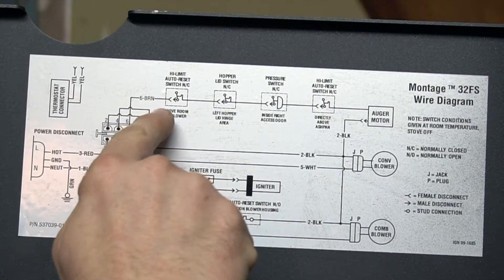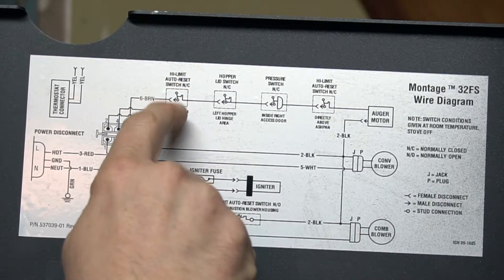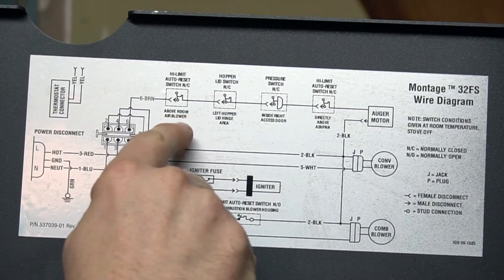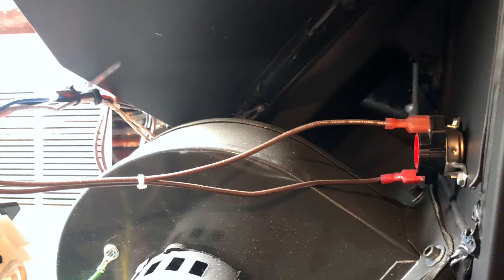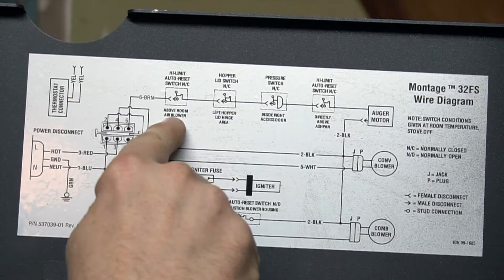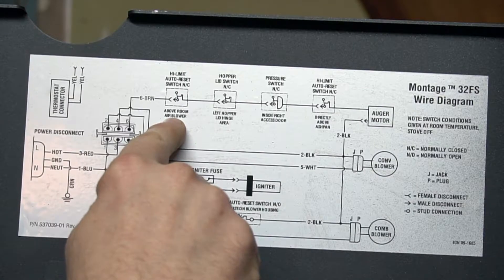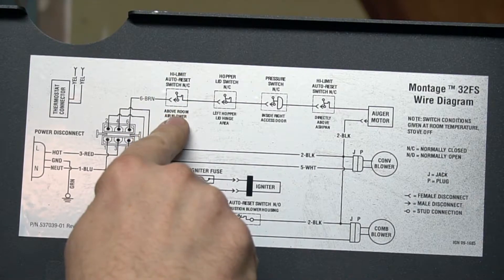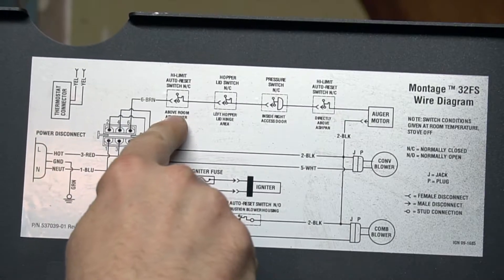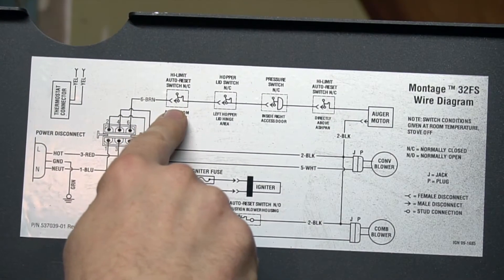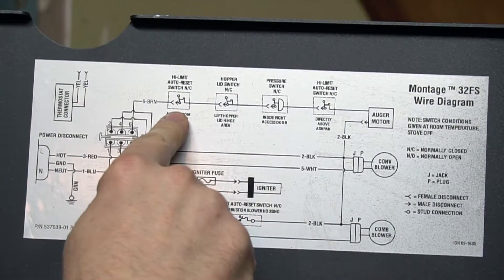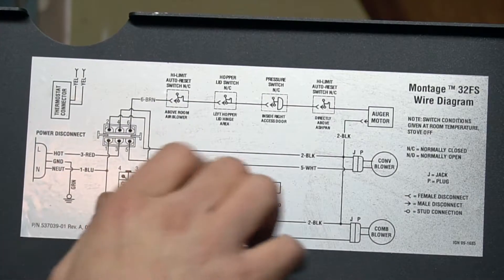on the feed circuit. So we have a high limit auto reset which is normally closed, and this is above the room blower. So if the room blower is not working properly, the back of the stove will overheat and it will shut off the feed. All right, so if you're not getting any feeding, this is the one that I would check first. Make sure that this is conductive and make sure that your room blower is working right.